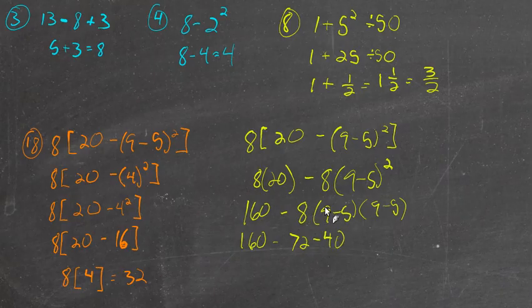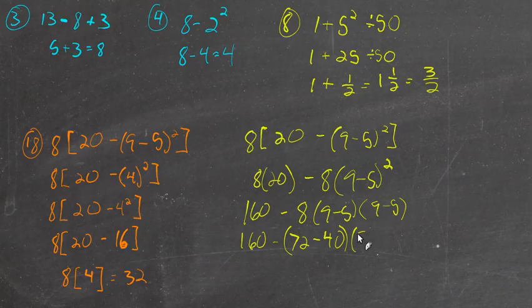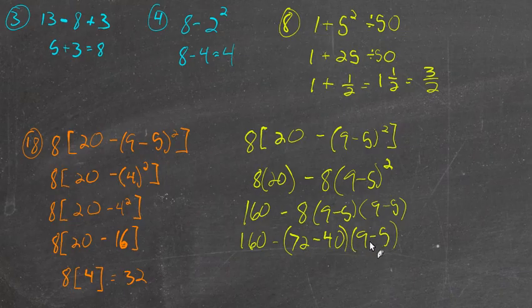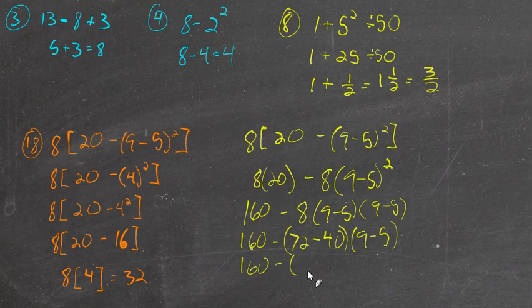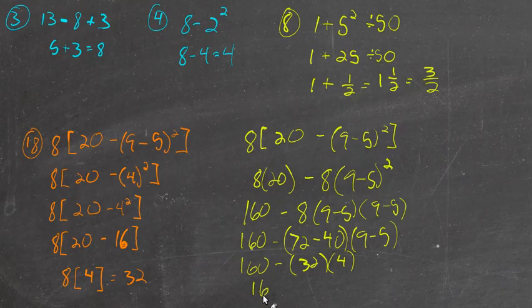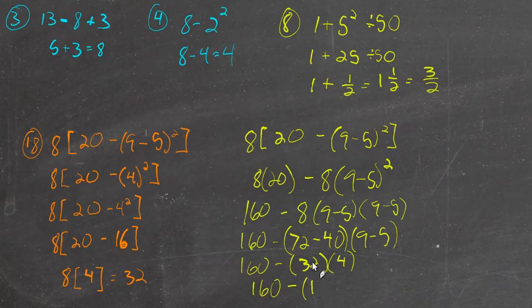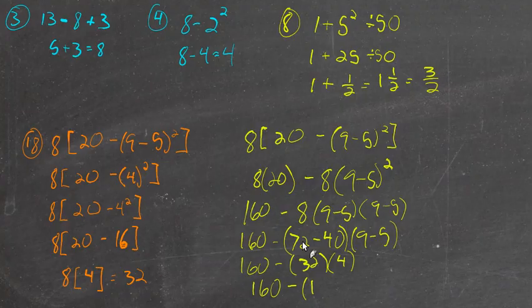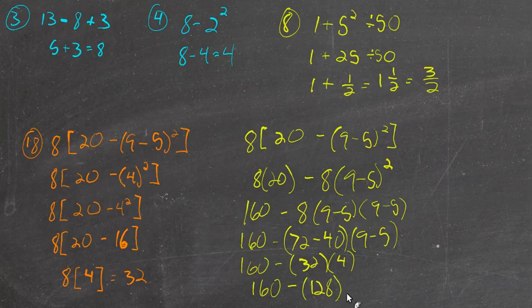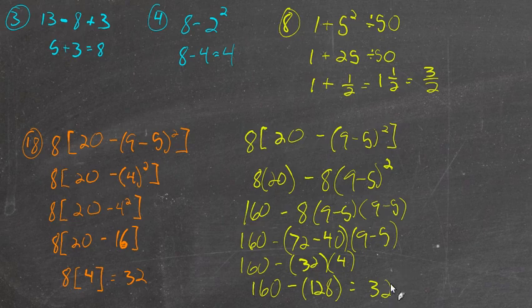Okay, so I just multiply this together. This is still grouped together. I could multiply this by 9 minus 5. I could subtract these together first. 72 minus 40 is going to be 32. 9 minus 5 is 4. 160 minus 32 times 4 is going to be... it doesn't seem right. I'm just going to double check this. 128. And 160 minus 128 is 32. And so you get the same answer.